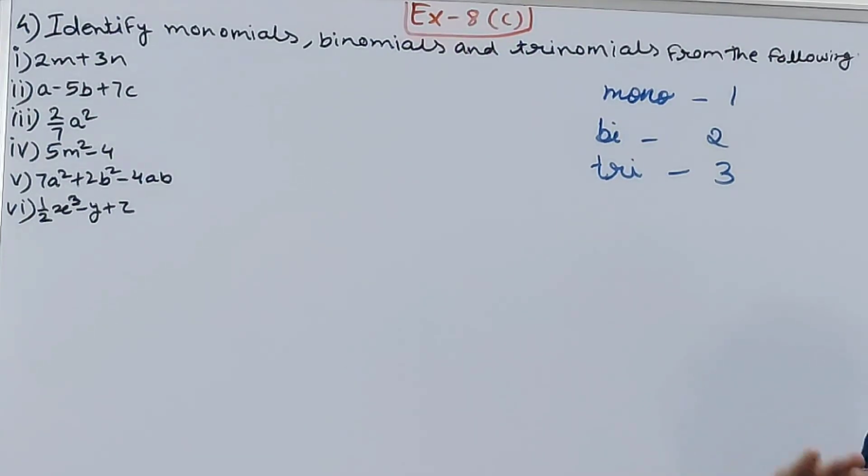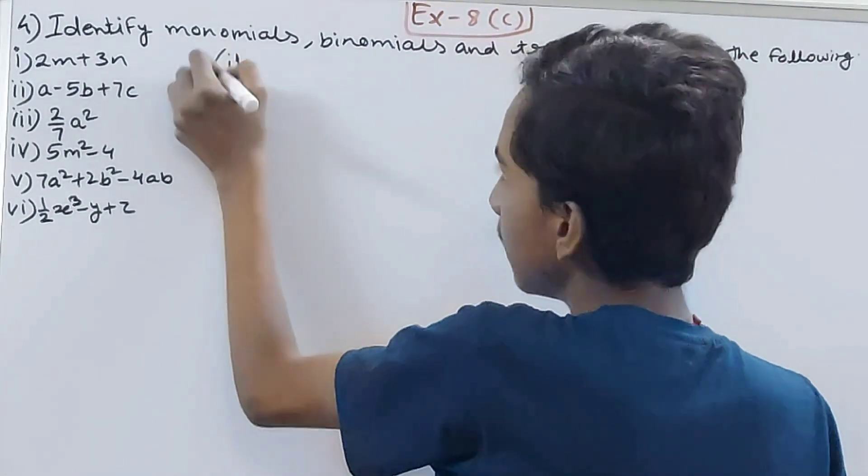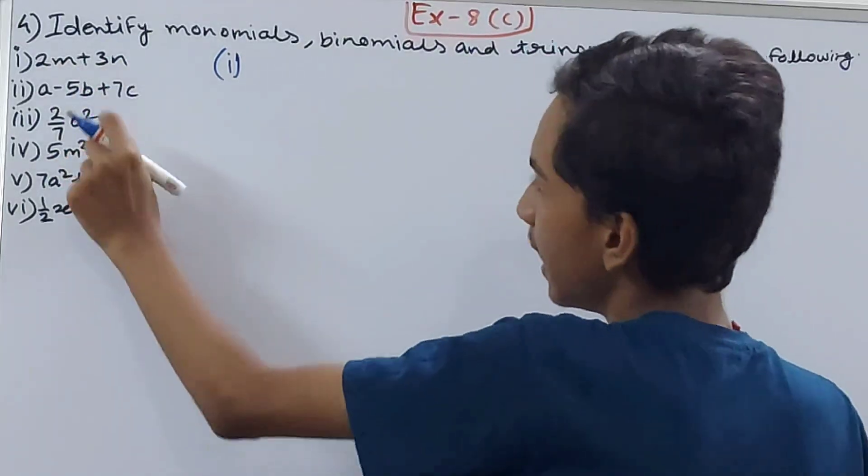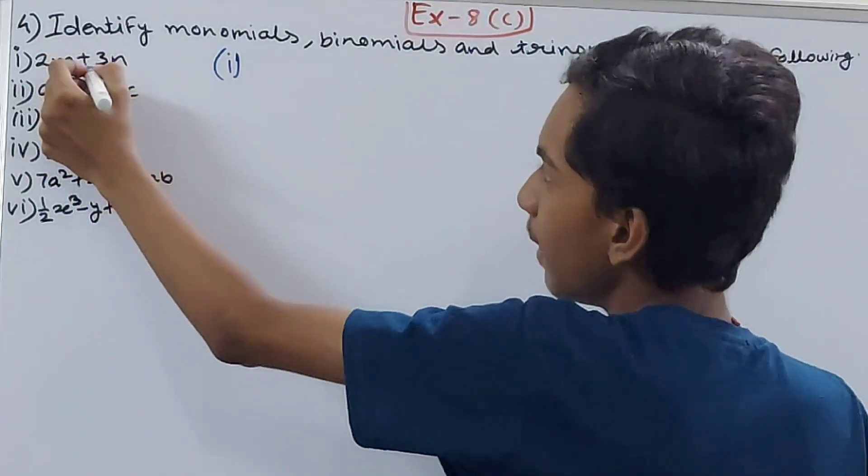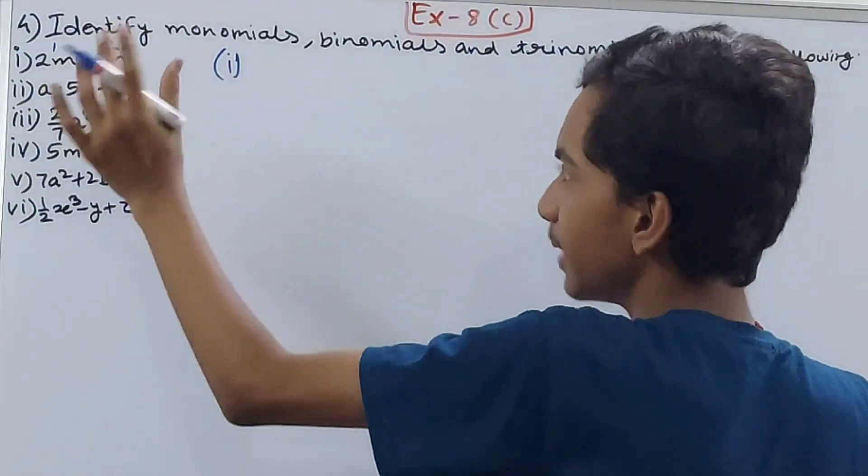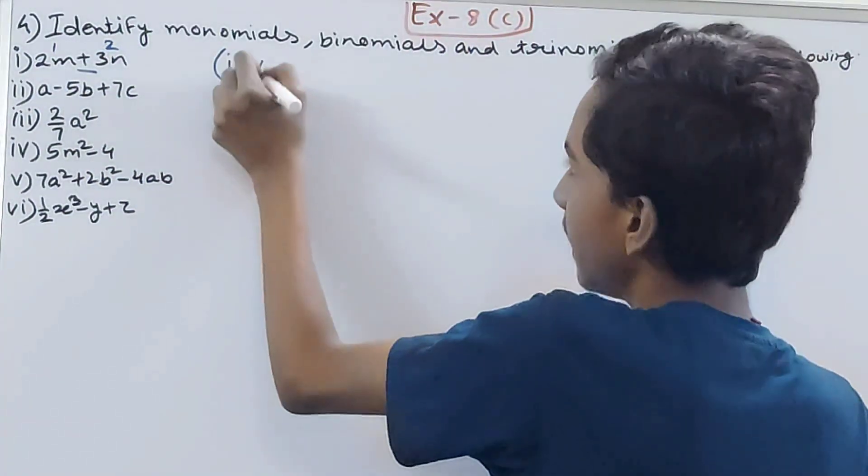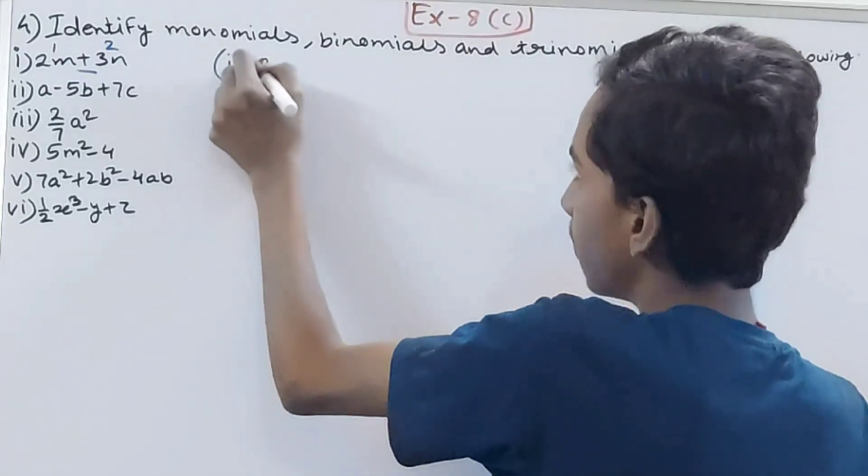The first one is 2m plus 3n. You can see the plus sign is separating - this is the first term, this is the second term. These two terms are separated by the plus sign, so how many terms? Two terms. That means this is a binomial.